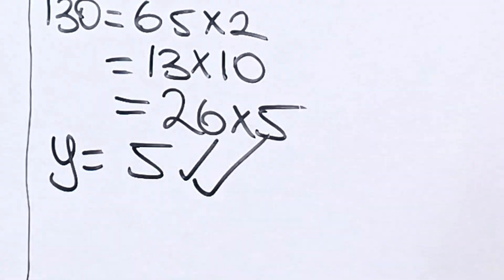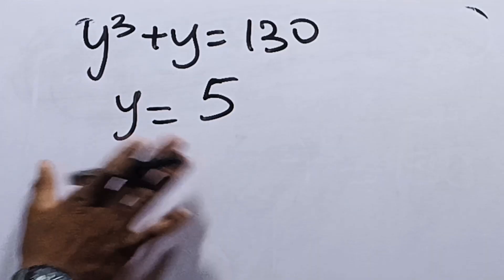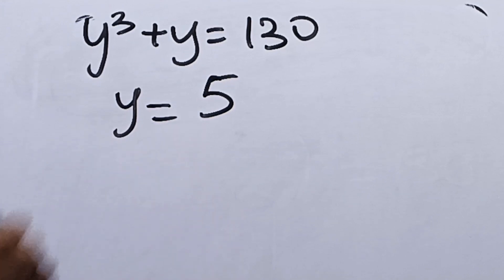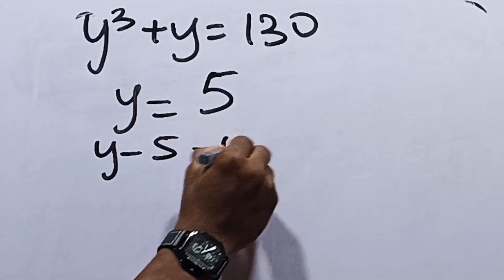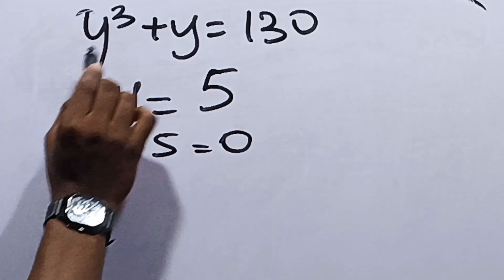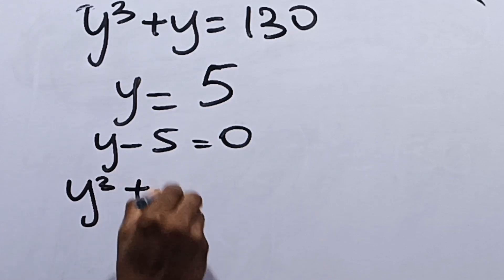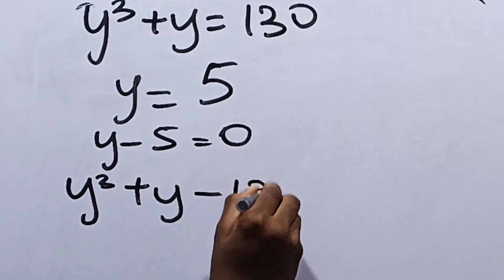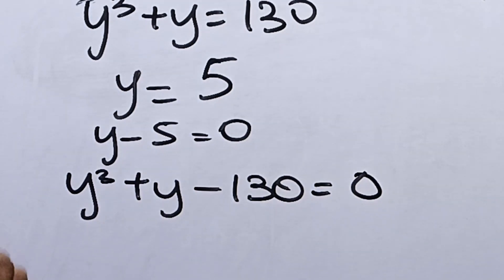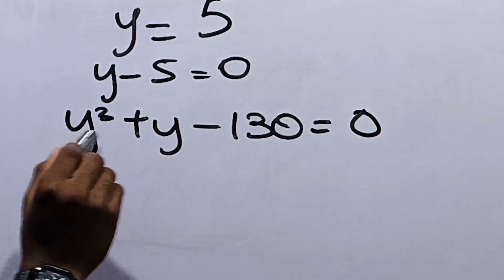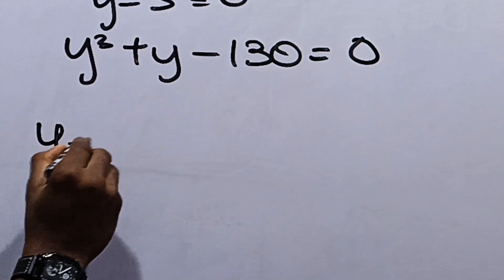This is just one of the answers for y. How do we get the rest? We already have that y equals 5, which means y minus 5 equals 0. This equation says y cubed plus y equals 130, which means y cubed plus y minus 130 equals 0. Now, dividing this expression by (y minus 5) using the long division method.